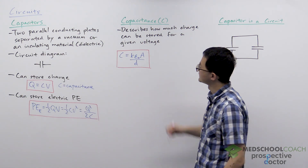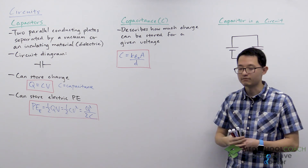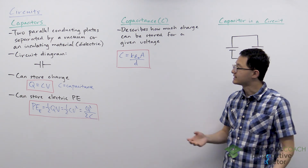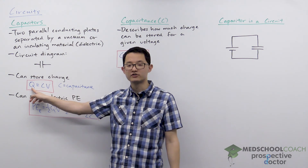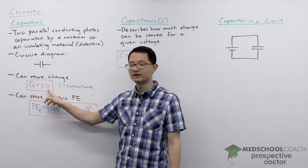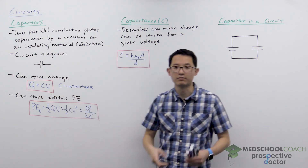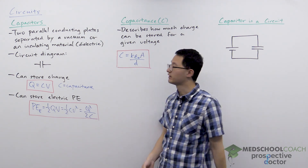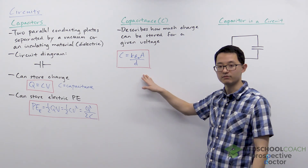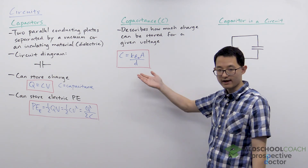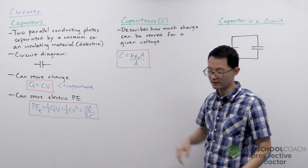Capacitance describes how much charge can be stored for a given voltage. In a sense it's like a constant — the more charge you store on the two plates, the greater the voltage and potential difference. So C, the capacitance, is essentially the proportionality constant between these two variables. However, capacitance is not a fixed constant. Similar to resistance, you can build different capacitors with different capacitances, and there are different variables that determine the capacitance of each capacitor.